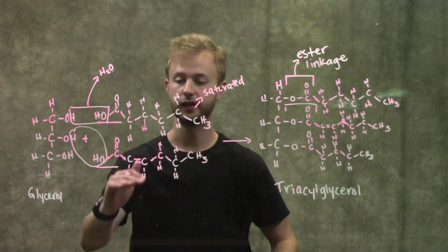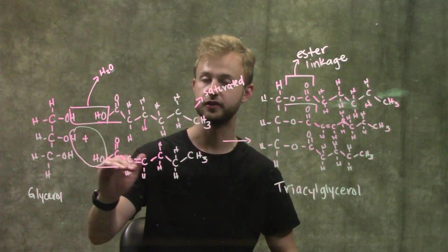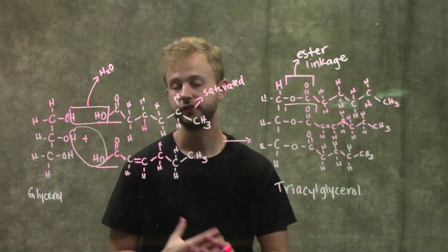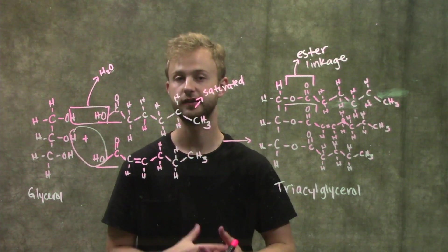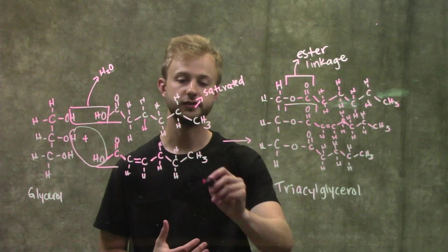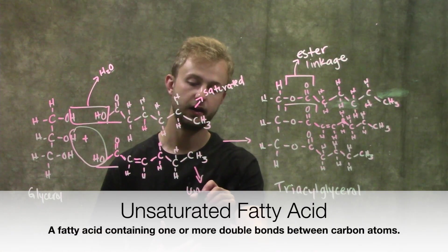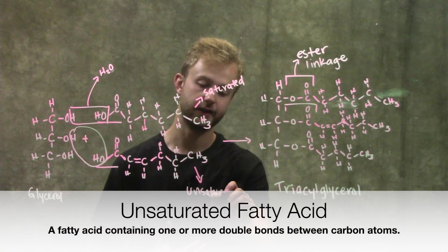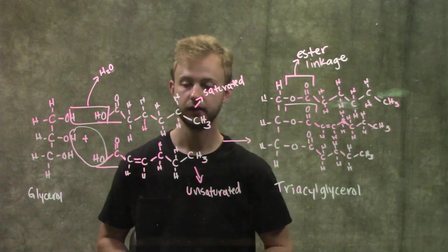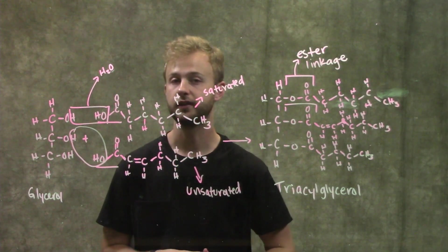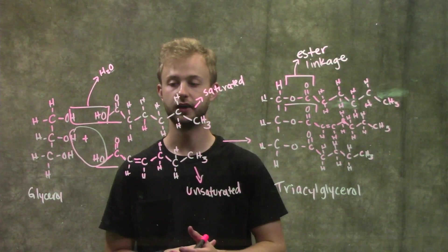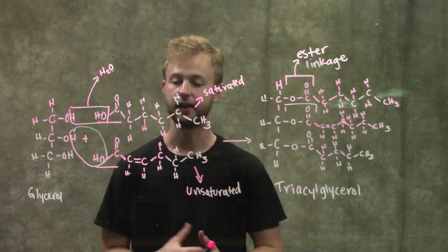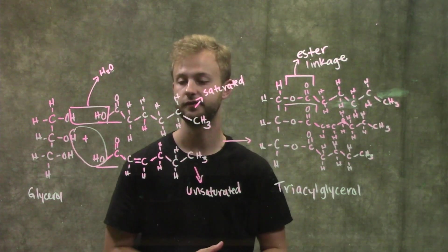Moving on to this one down here, we can see pretty easily that there's a double bond in here. When there's a double bond, that keeps those carbon atoms from binding to as many hydrogens as they can. So they're no longer saturated. We call these unsaturated fatty acids. And those are typically going to be plant fats, like plant oils, olive oils, things like that are going to have unsaturated fatty acids.